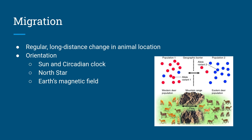Another behavior is migration. Environmental stimulus can trigger the movement of animals — birds, fish, and other animals undergo migration due to certain changes in their environment. This can be through factors such as lighting and the sun; birds reorient themselves by the sun's position. Some animals use the circadian clock, an internal clock with a 24-hour cycle. If there's no sun, nocturnal animals can use the north star. Certain animals also use Earth's magnetic field to configure their migration.